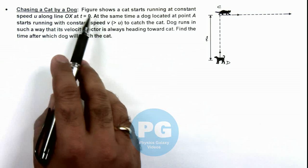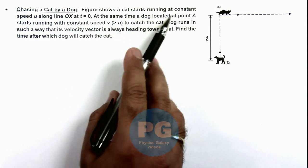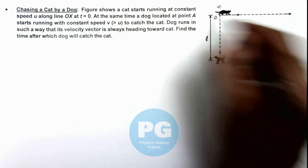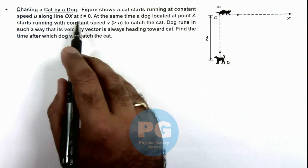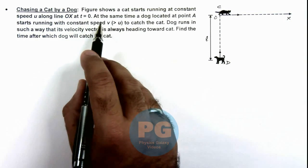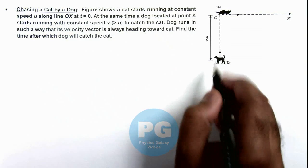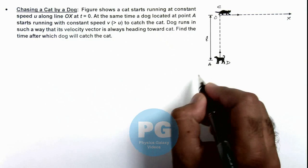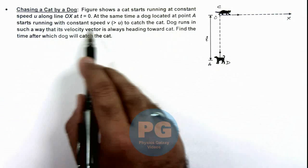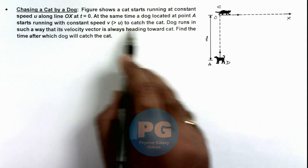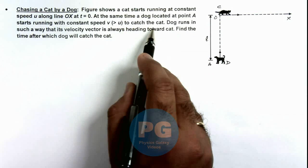Here we are given a situation in which figure shows a cat starts running at a constant speed u along this line o x at t equal to zero. And at the same time a dog located at point ay, this dog is located at point ay, starts running with constant speed v which is greater than the speed of cat to catch the cat.